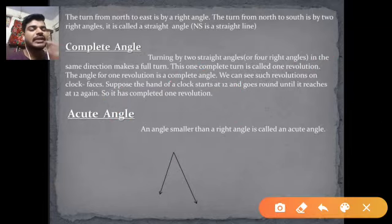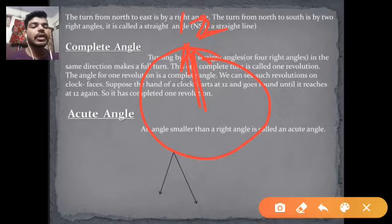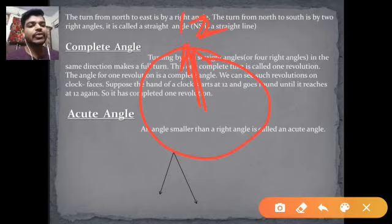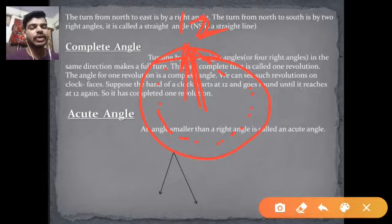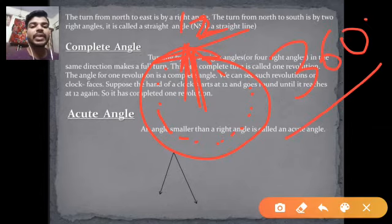A simple household example is a clock. If a needle is pointing at 12 o'clock and starts rotating, completing a full rotation and returning to 12, it makes a 360-degree angle — that is the complete angle.